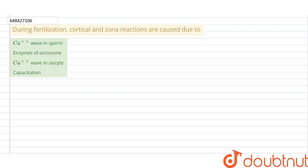Hello everyone, in this video we have a question that during the fertilization, the cortical and zona reactions are caused due to options: calcium plus plus wave in sperm, enzyme of acrosome, calcium plus plus wave in oocytes, and capacitation.